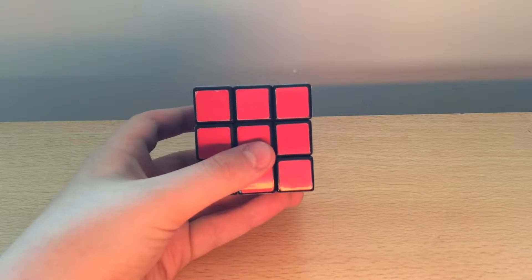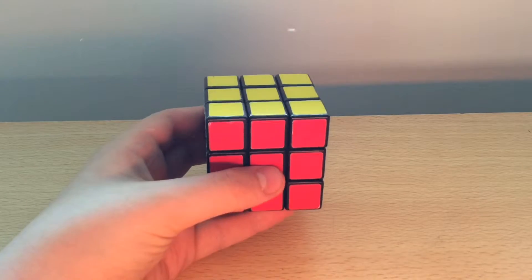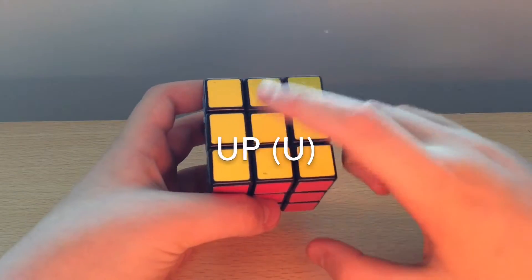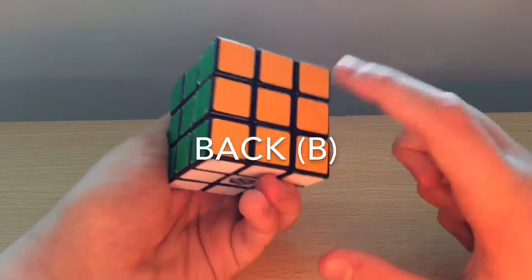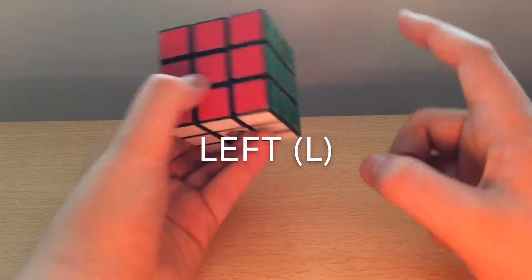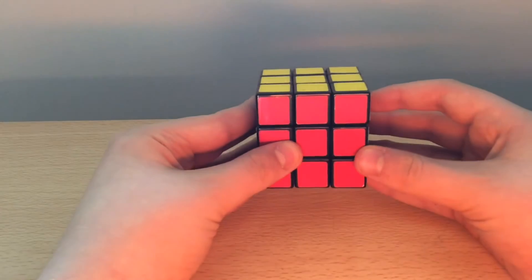So these are the moves that we are going to use. For each move we say there is an up face, a bottom face, a front face, a back face, a left face, and a right face. And we're always going to hold it in this position.